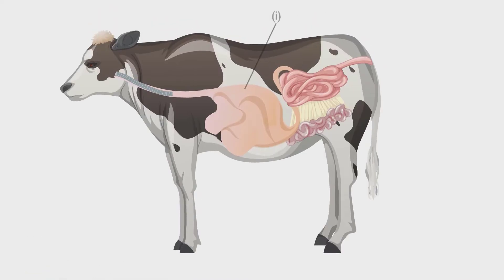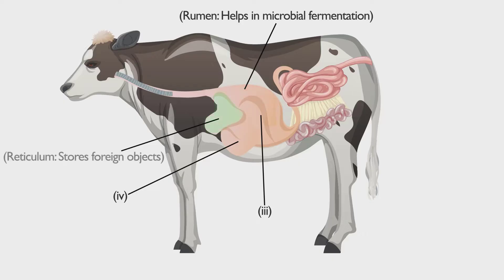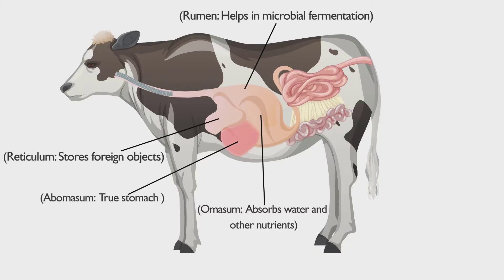Now let's look at this cow's stomach, which has four chambers and is very complex. Each of the chambers has a separate function. The first chamber, rumen, helps in microbial fermentation. The second chamber, reticulum, stores foreign objects. The third chamber, omasum, absorbs water and other nutrients. And the fourth chamber, abomasum, is the true stomach, which is like our stomach and secretes hydrochloric acid and protein-digesting enzymes.